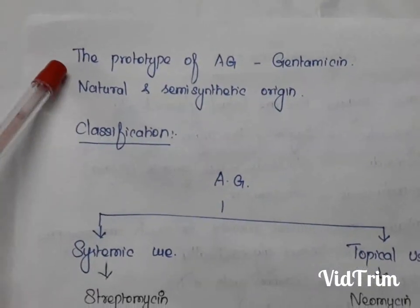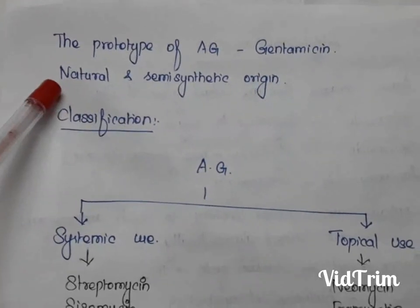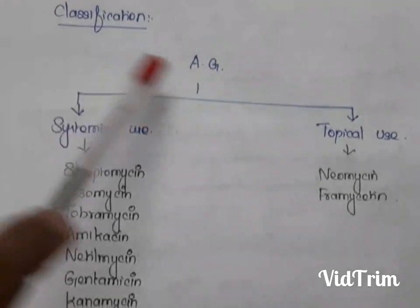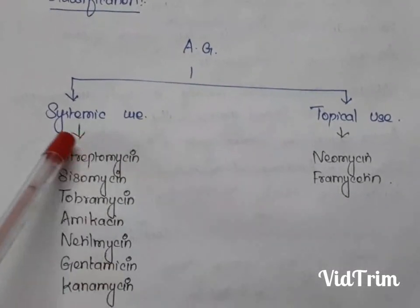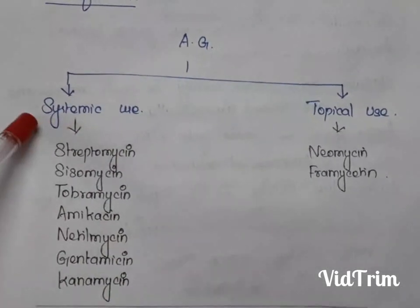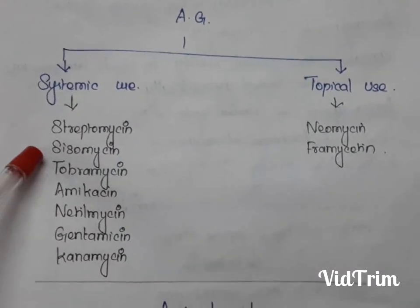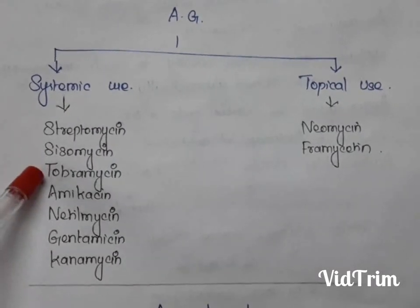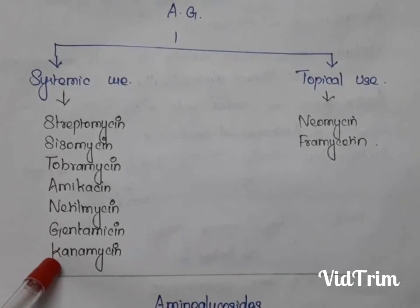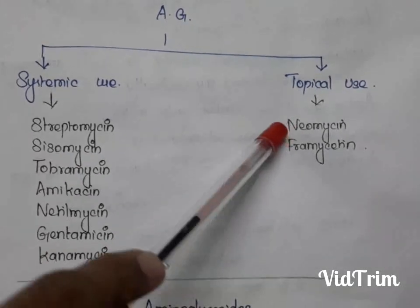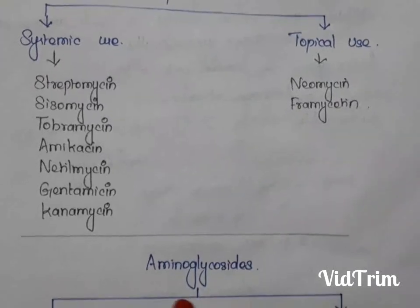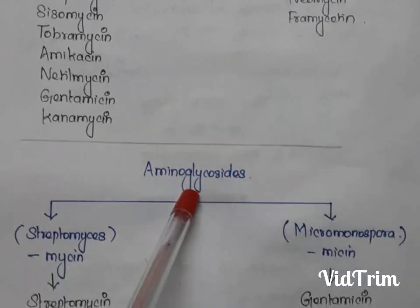The prototype of aminoglycosides is gentamicin, which is of natural and semisynthetic origin. Aminoglycosides are classified into two types based on use: systemic use and topical use. Examples for systemic use are streptomycin, sisomicin, tobramycin, amikacin, netilmicin, gentamicin, and kanamycin. For topical use, they are neomycin and framycetin.